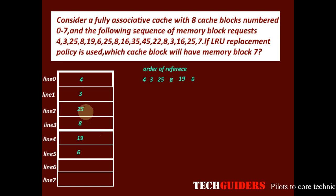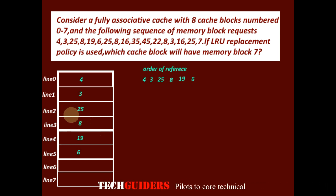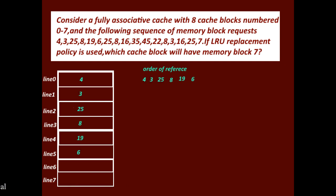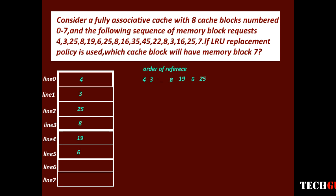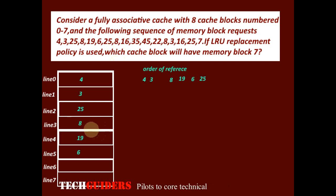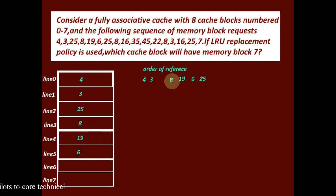Block 25 is already residing in the cache, so this is a cache hit. In the order of reference, 25 is now the most recently used. After 25, we have a request for block 8. Block 8 is also residing in the cache — again a cache hit — and in the order of reference, 8 is now the most recently used.